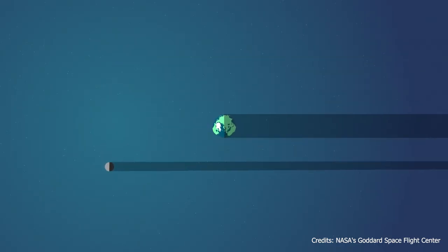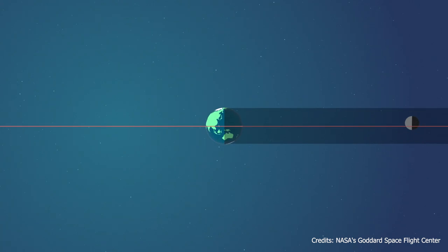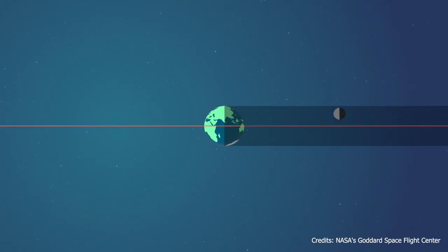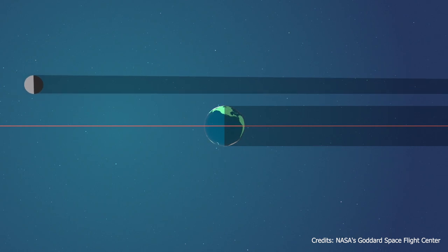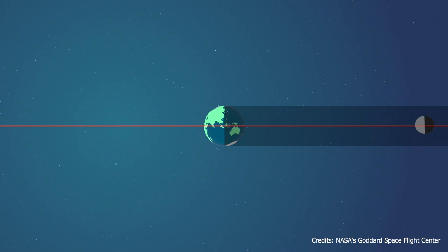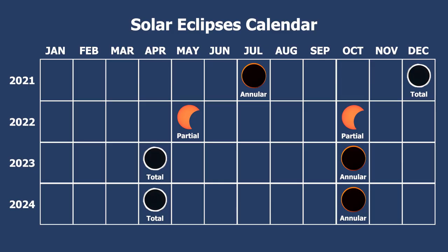If the Moon's orbit were in the same orbital plane as the Earth's, we would observe solar eclipses every month. However, the lunar orbit is tilted at more than 5 degrees to the Earth's orbit around the Sun. For this reason, the Earth becomes engulfed in the Moon's shadow only at certain periods of time. Each year, solar eclipses can occur from 2 up to 5 times.